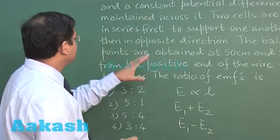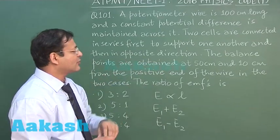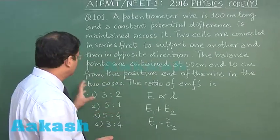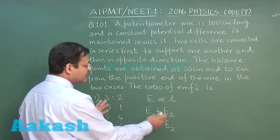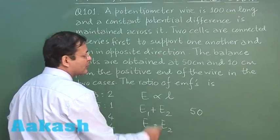So they are saying that the balance points are obtained at 50 centimeter and 10 centimeter from the positive end of the wire in the two cases. That means E1 plus E2 is proportional to 50 and E1 minus E2 is proportional to 10.